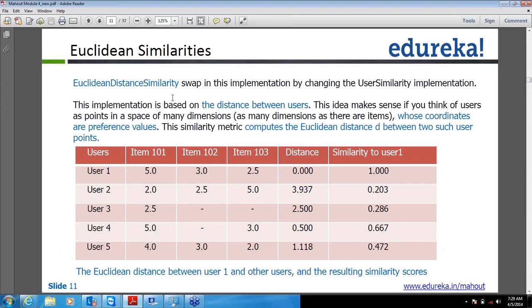That's how it calculates the similarity between two users. Coming back to our example again, I will change this from Pearson to Euclidean similarity and see how it will be. Let me try this.